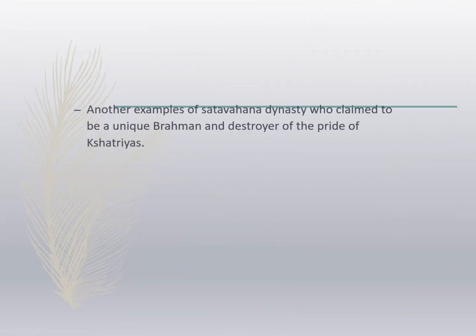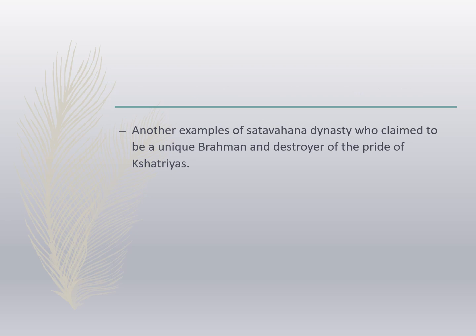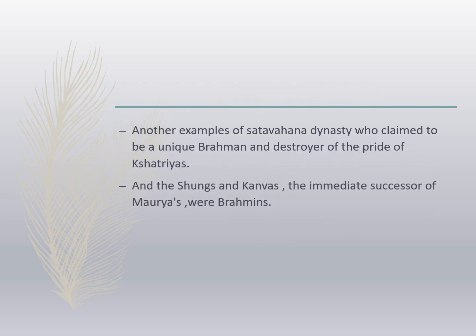It is also interesting that the Satavahana ruler Gautamiputra Satakarni claimed to be a unique brahman and the destroyer of the pride of Kshatriyas. As we can see from these examples, integration within the framework of caste was often a complicated process. The Satavahanas claimed to be Brahmins, whereas according to the Brahmins, kings ought to have been Kshatriyas.